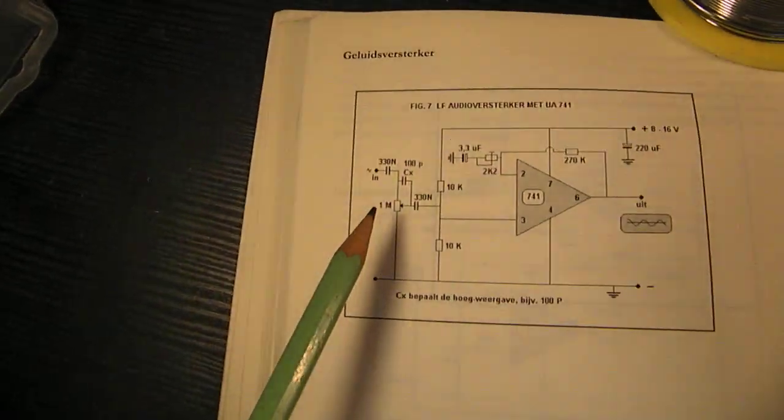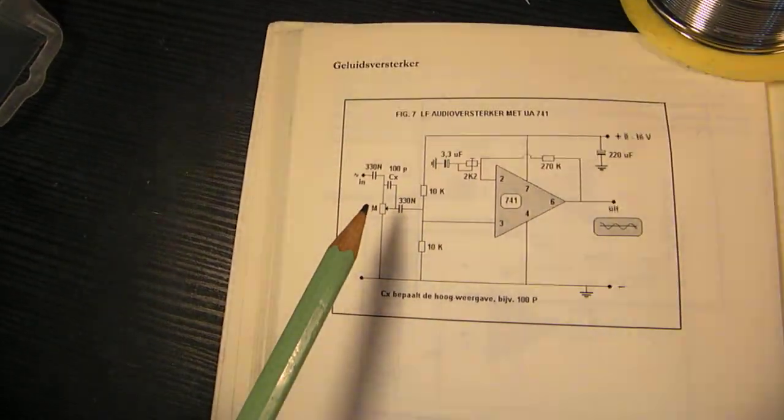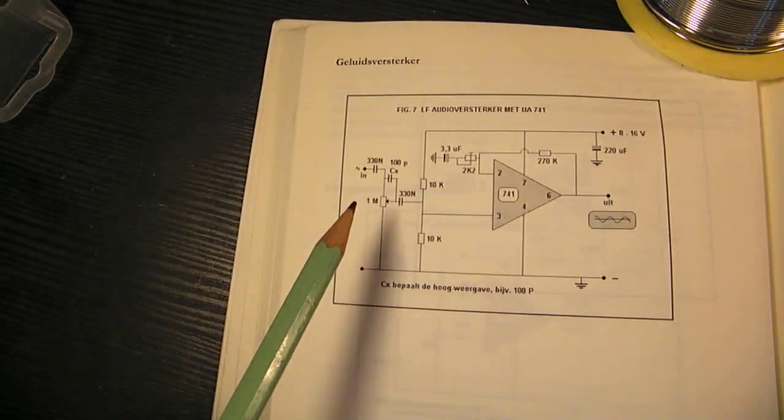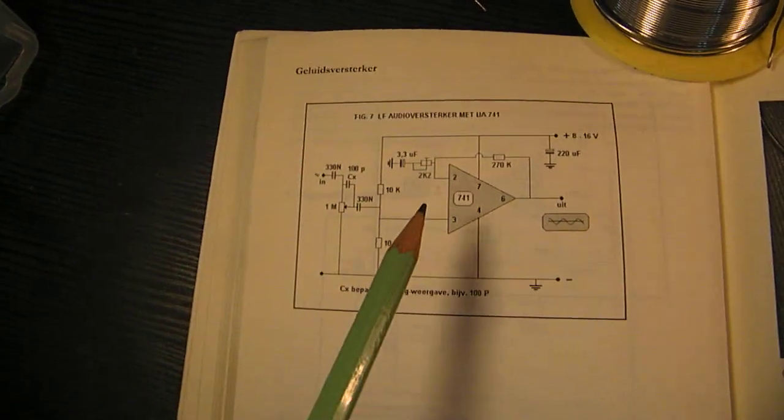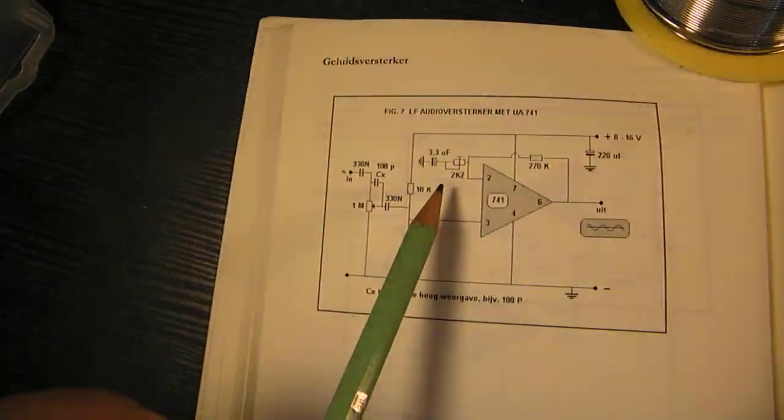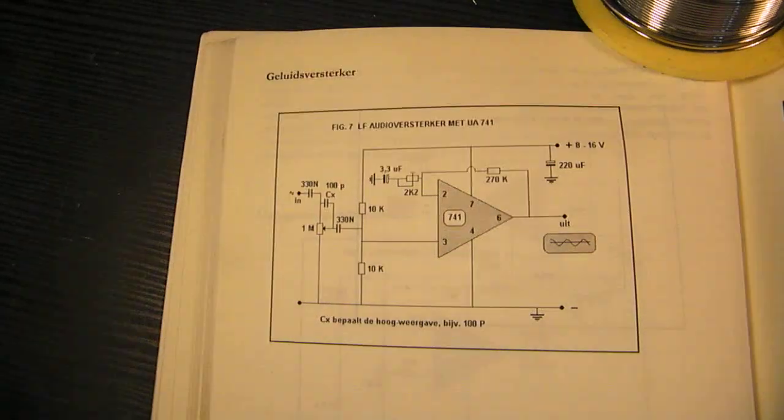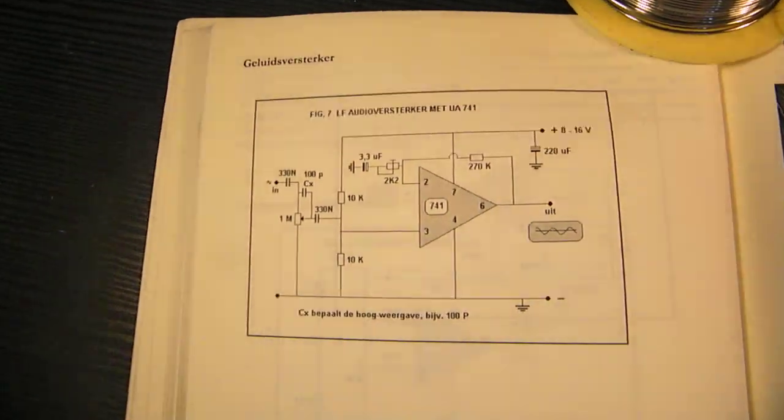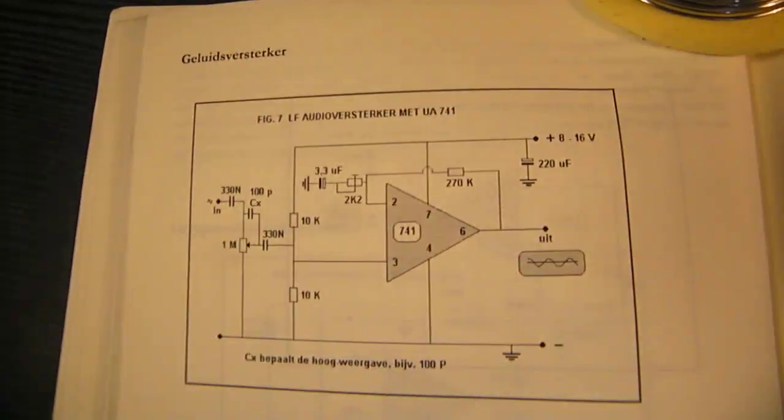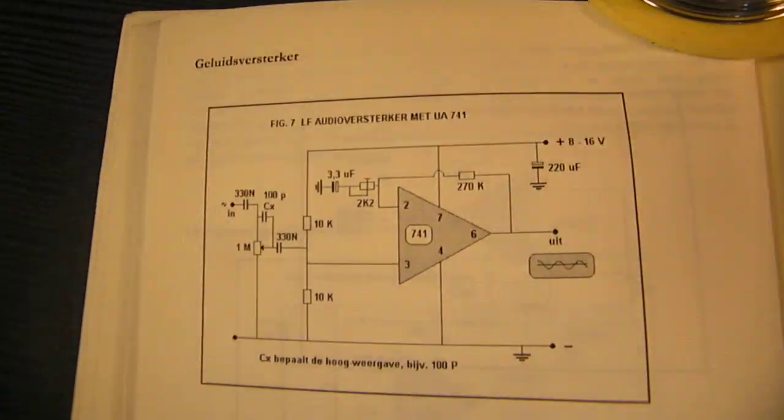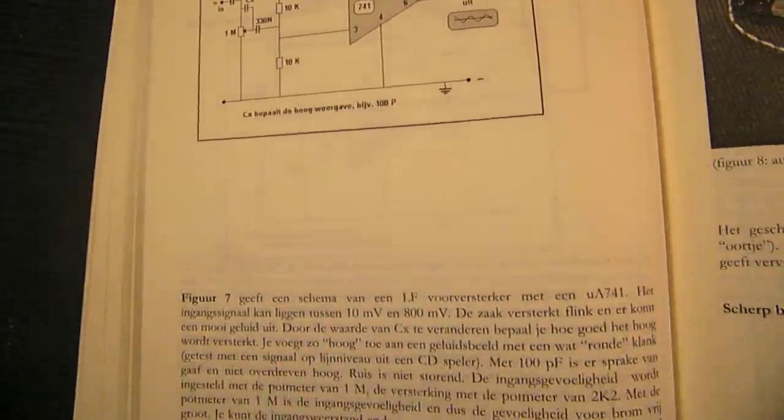With this capacitor CX you can add more high to the output, and the amplification is set with this potentiometer 2k2. It was a good circuit as far as I can remember.